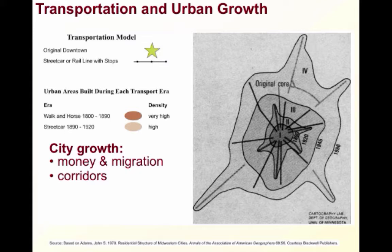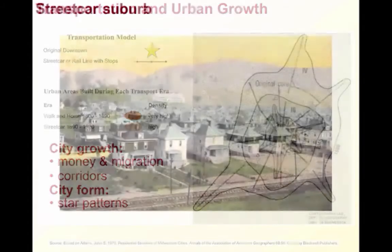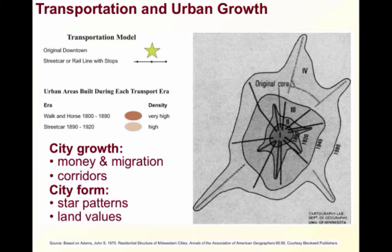Some cities declined that were not connected and were bypassed by the railroad network. The form of cities was also altered — the CBDs and rail corridors grew, making for wider roads. The urban pattern was also altered as star patterns, or hub and spoke patterns, emerged. Streetcar suburbs sprung up in the hinterlands, as seen in this old postcard from 1911 of Goodlawn, a suburb of Wheeling, Illinois. As far as land values, real estate around passenger stations became more valuable and popular, especially for commercial interests. Additionally, railroads created socioeconomic divisions, with some people finding themselves on the wrong side of the tracks. So this looks more like Homer Hoyt's sector model.